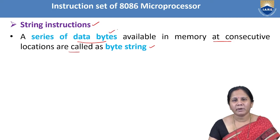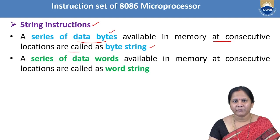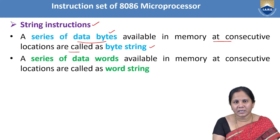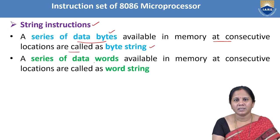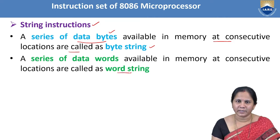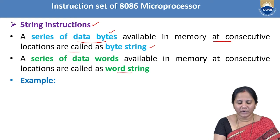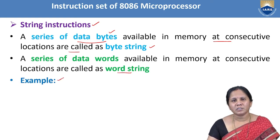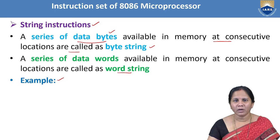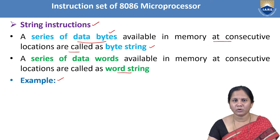Data bytes means one byte equals eight bits. If a string consists of a series of data words arranged in consecutive memory locations, that string is called a word string. Word means 16 bits. A string may consist of numbers or characters. If a string consists of a set of characters, those characters will be arranged in consecutive memory locations in the form of their ASCII equivalent.